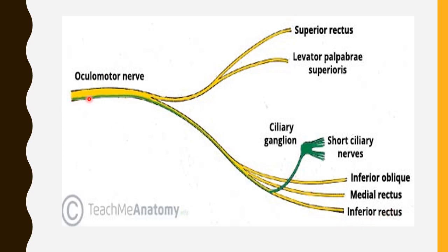The parasympathetic fibers run along with the inferior branch of the main motor fibers. They relay as preganglionic fibers to the ciliary ganglion, located close to the optic nerve in the orbit. From the ciliary ganglion, postganglionic fibers travel via the short ciliary nerves to innervate the sphincter pupillae and the ciliary muscles.